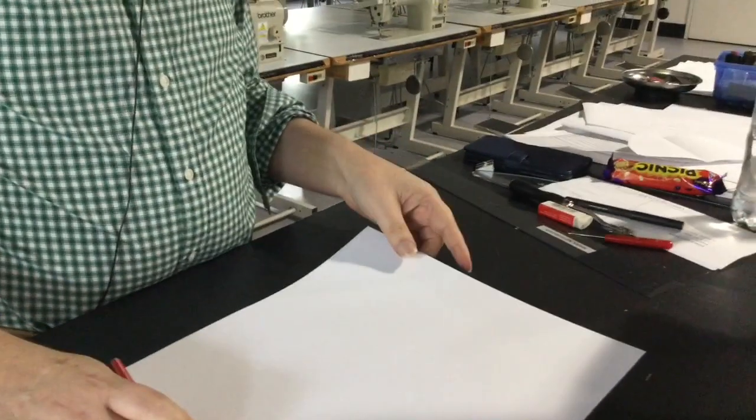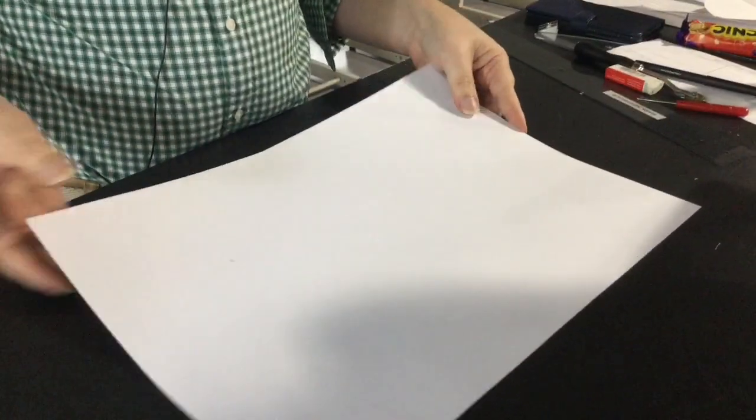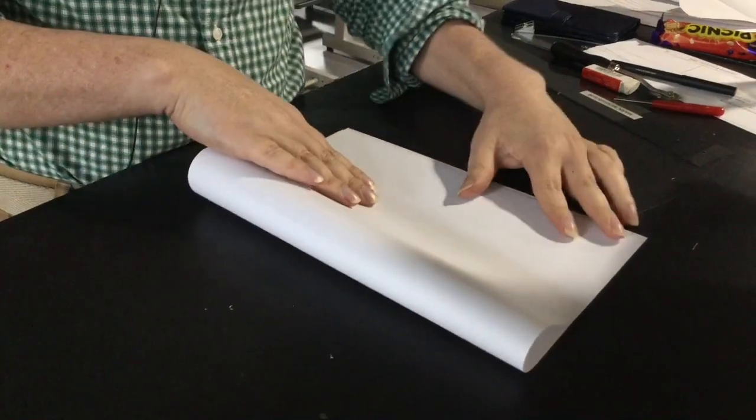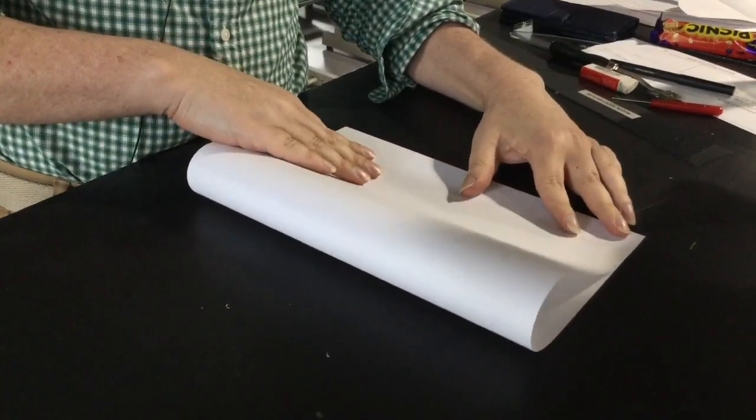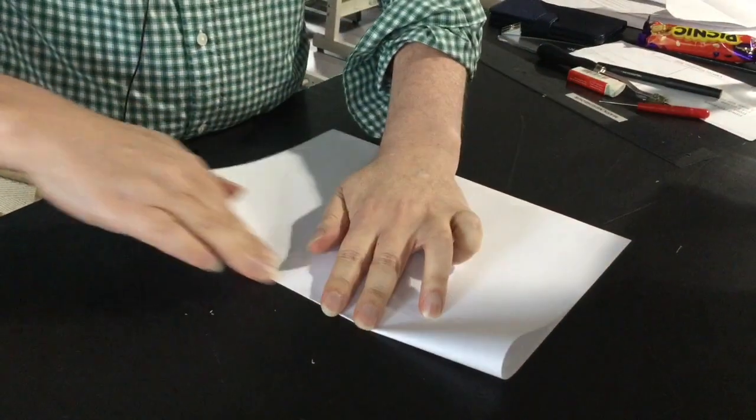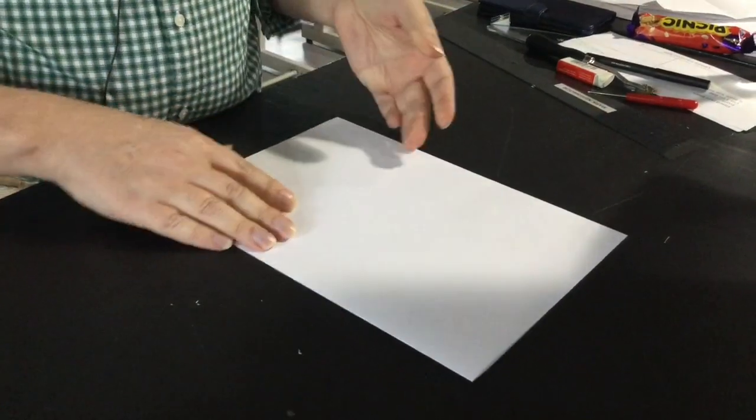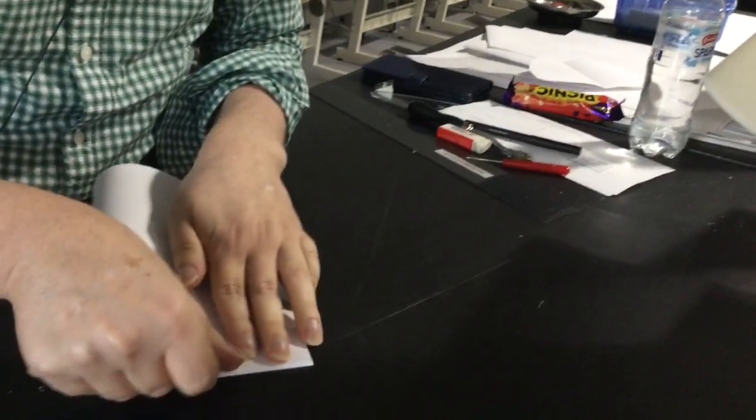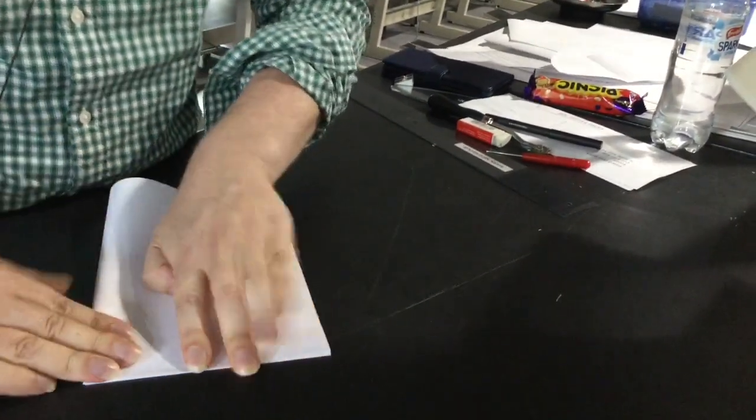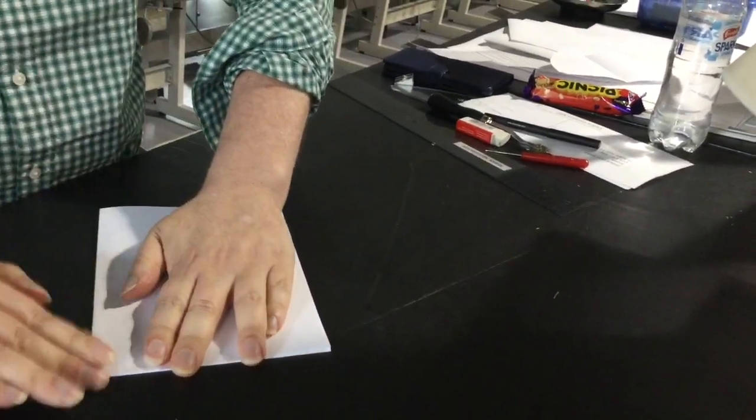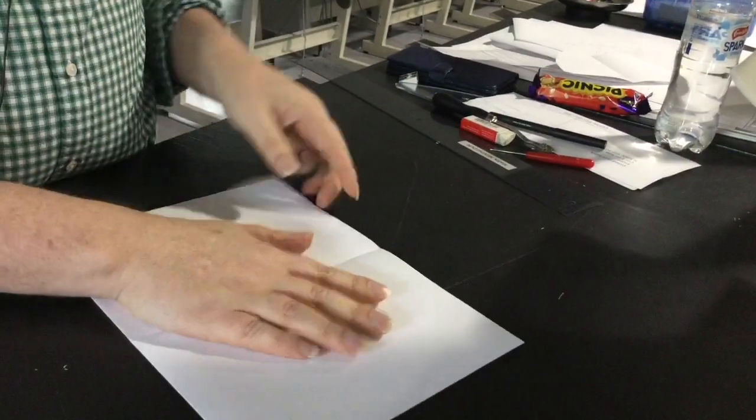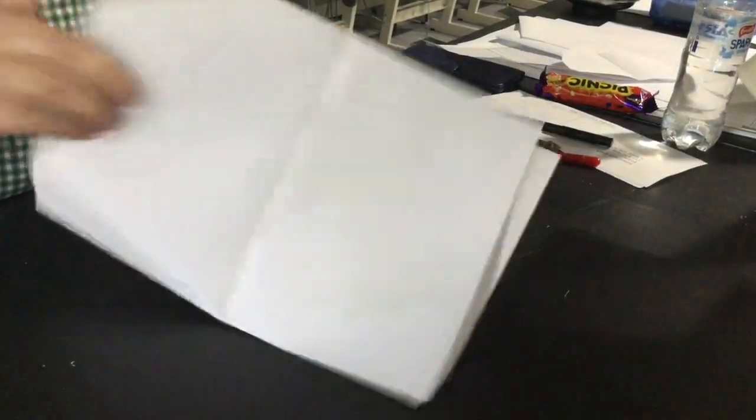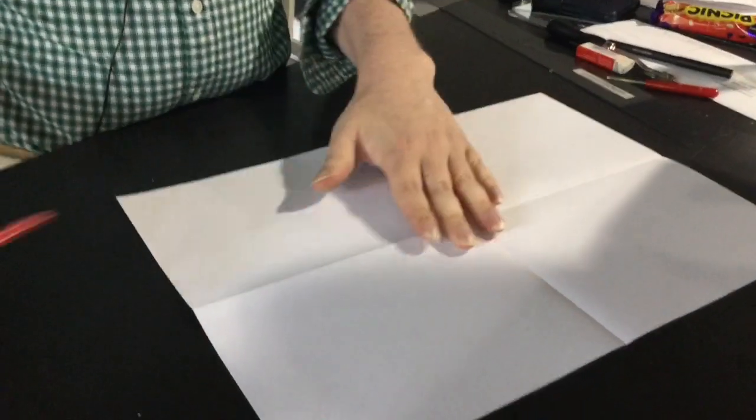Okay, so we'll start with our piece of paper. I'm going to fold it in half and then we're going to fold it in half again so that we've got four quarters which make up a full scale.